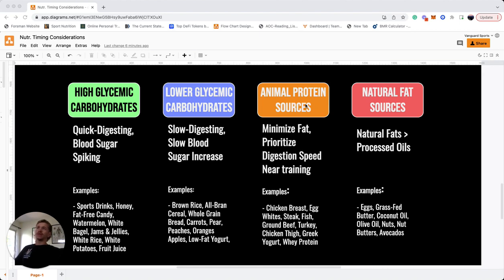Next is animal protein sources. If you remember from our food composition episode, we're going to opt for animal protein sources over plant protein sources for a variety of reasons we're not going to get into today. But in terms of animal protein sources, we want to minimize fat and prioritize digestion speed as we get closer to training. Some examples would be chicken breasts, egg whites, steak, fish, ground beef, turkey, chicken thighs if we're further from training, Greek yogurt (non-fat if close to training), and whey protein.